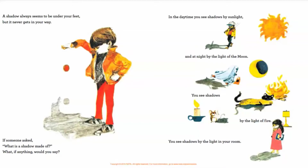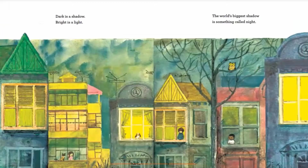In the daytime you see shadows by sunlight, and at night by the light of the moon. You see shadows by the light of fire, you see shadows by the light in your room. Dark is a shadow, bright is a light — the world's biggest shadow is something called night.